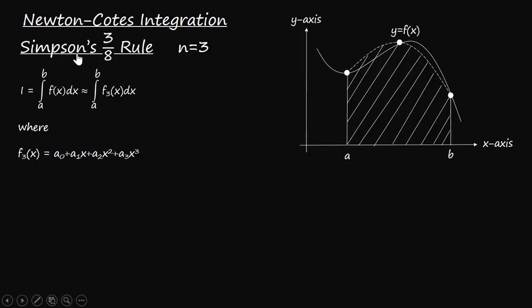From the basic concept of Newton-Cotes integration we know that when the given function is comparatively complex, not easy to integrate, then we can replace that function with a comparatively simple function which is easy to integrate. Now if you consider that function as the third order polynomial function, then the corresponding integration scheme is called Simpson's three-eighth rule.